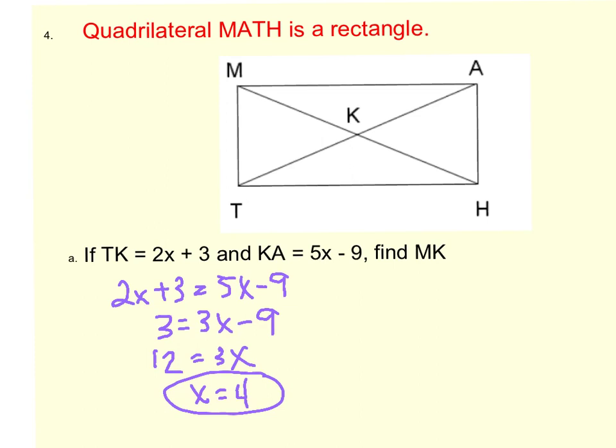Now, I'm going to use that to find MK. Because MK is a portion of a diagonal, we know the diagonals bisect each other, and in a rectangle the diagonals are congruent, which means that all of these pieces have to be congruent.